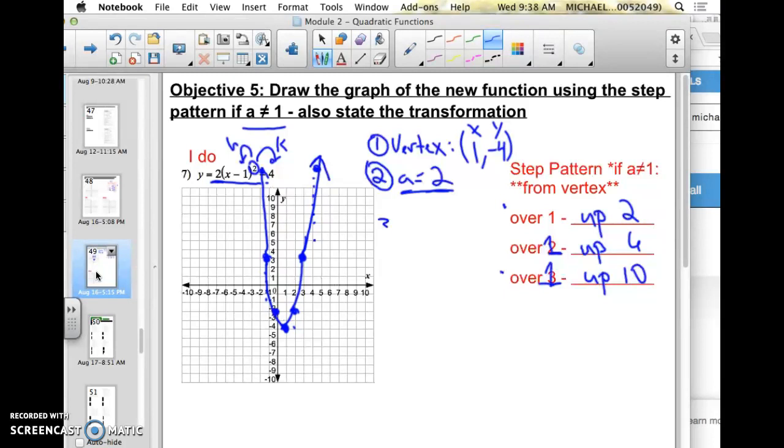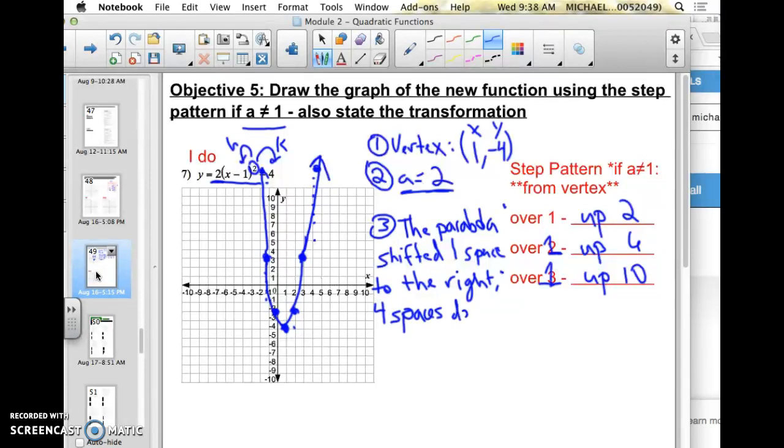To finish it off, I'm going to state the transformation. The parabola shifted one space to the right, four spaces down, and stretched vertically by a factor of 2. And that last part stretched vertically by a factor of 2 is referencing the a-value of 2. So it became skinnier. And then I'm done.